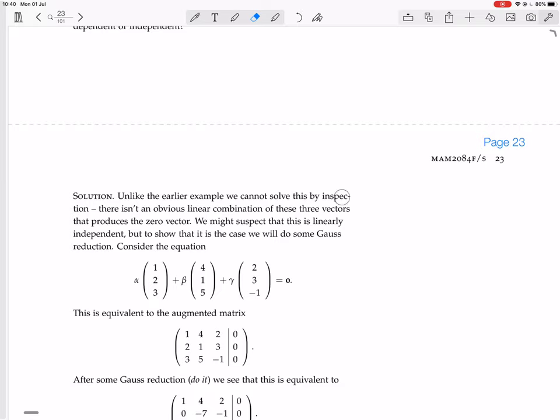So they said that they solved the previous one by inspection, and we just trusted what they said. Or we actually verified what they said. There isn't an obvious linear combination of these three vectors that produces a zero vector. We might suspect that this is linearly independent, but to show that this is the case, we will do some Gauss reduction.